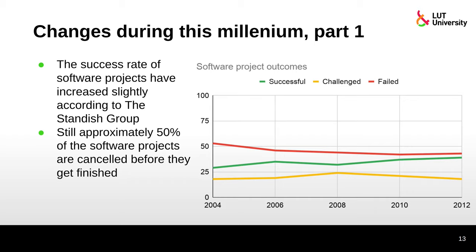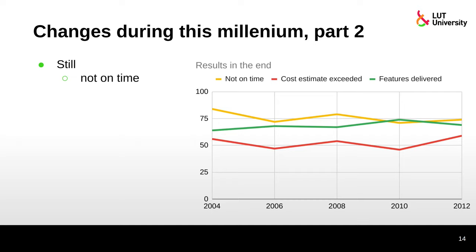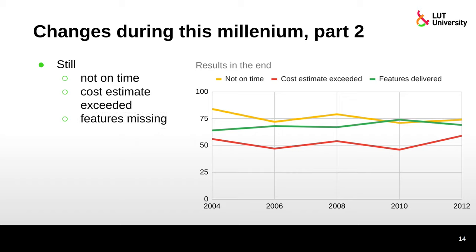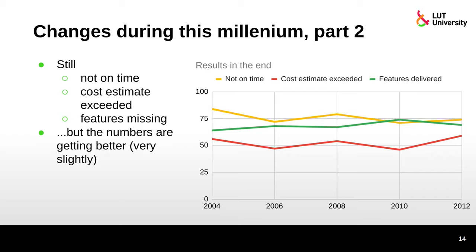Still, almost 50% of software projects are cancelled before they finish. Something like 75% of projects are not on time, cost estimates are exceeded in over 50% of cases, and there are features missing — basically around 30% of features are missing and only 67% are delivered. Numbers are getting better very slightly, according to the Standish Group.